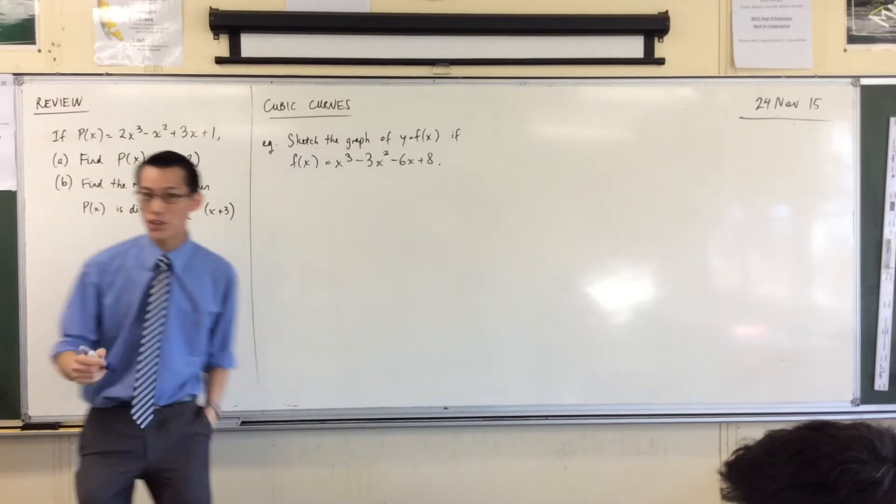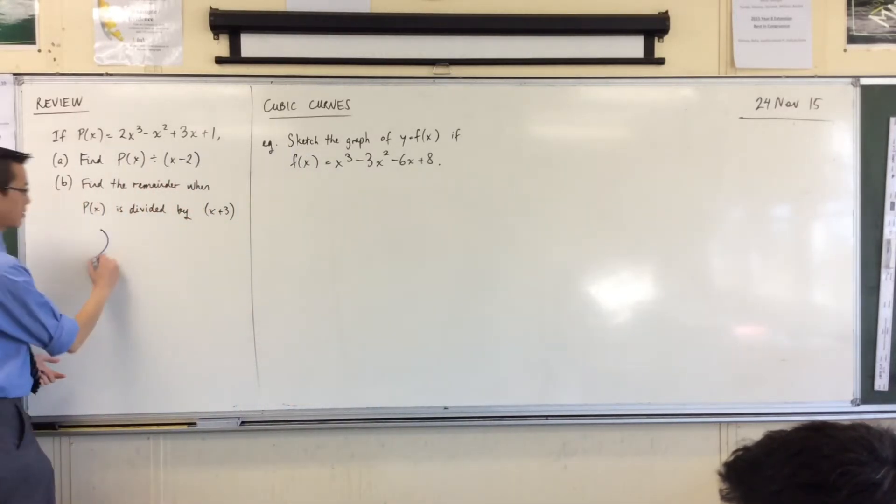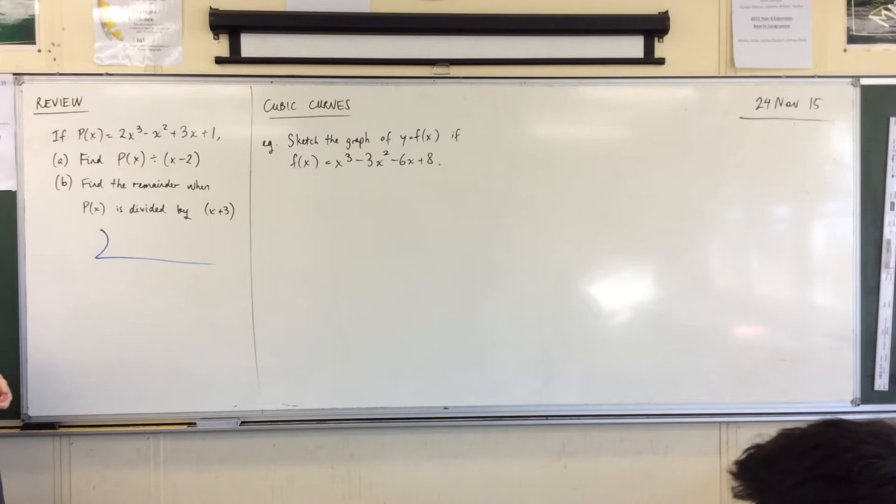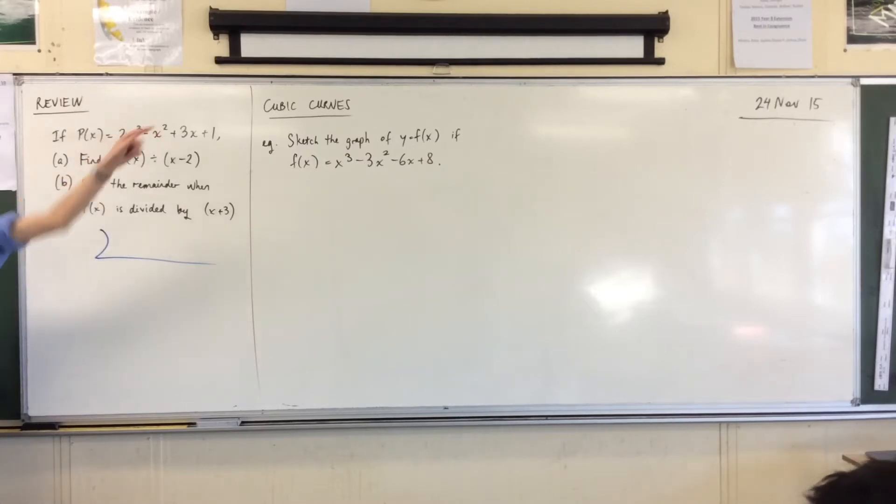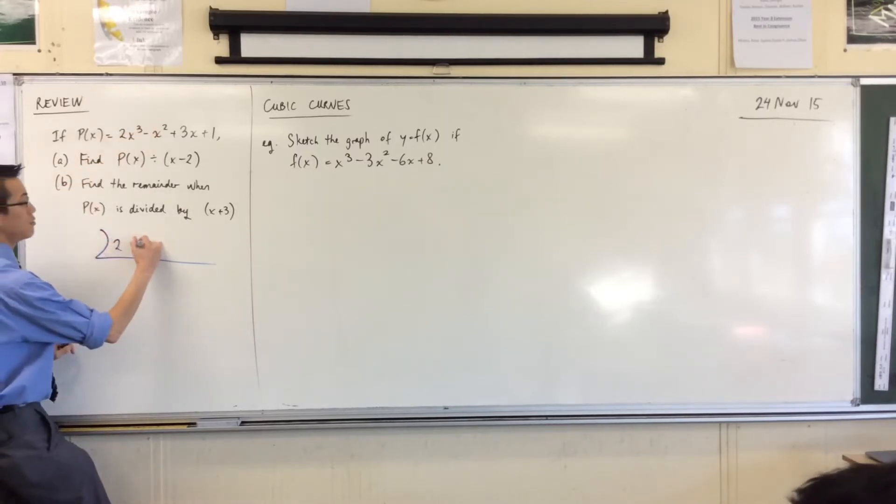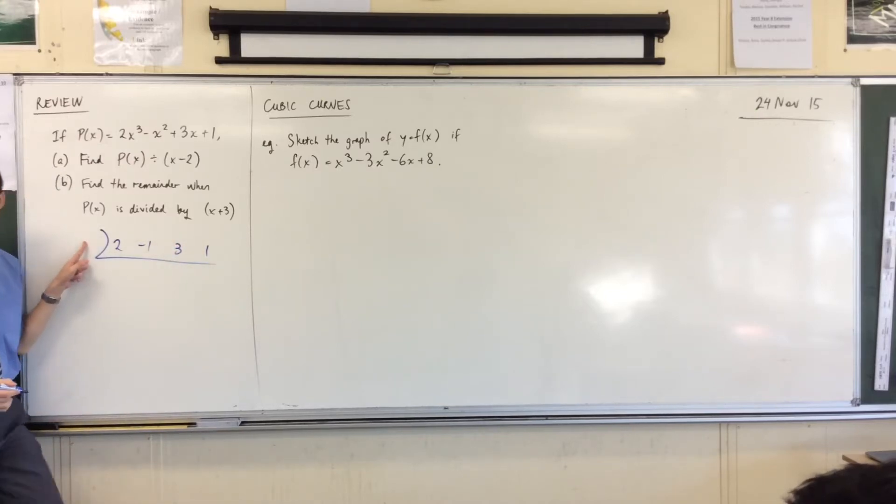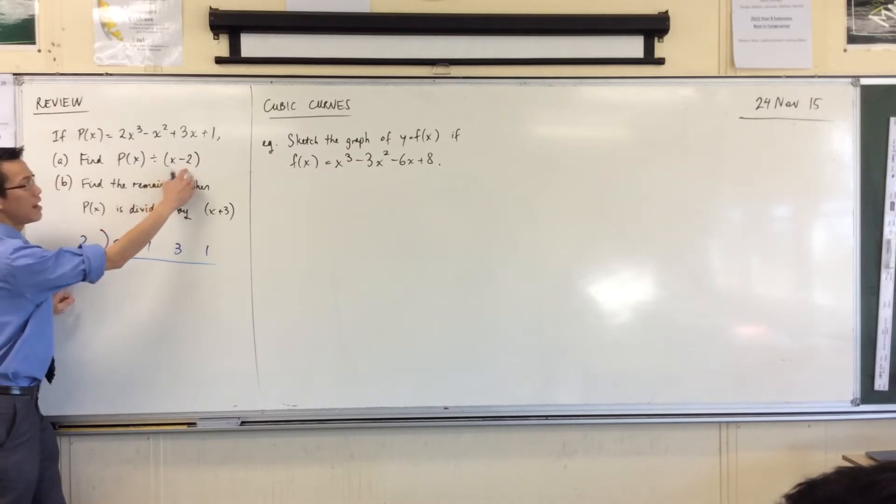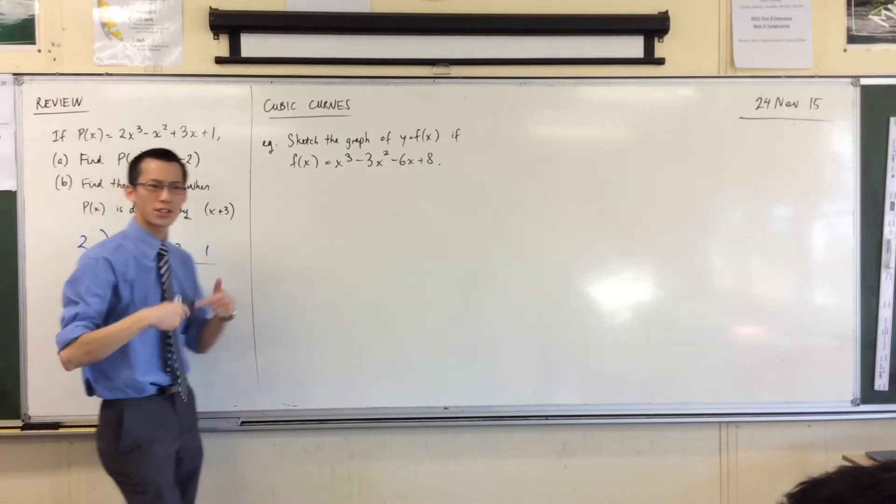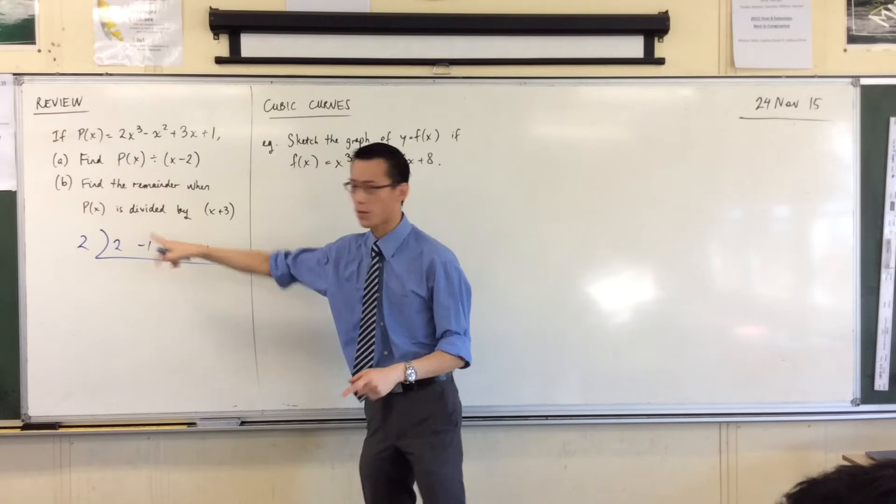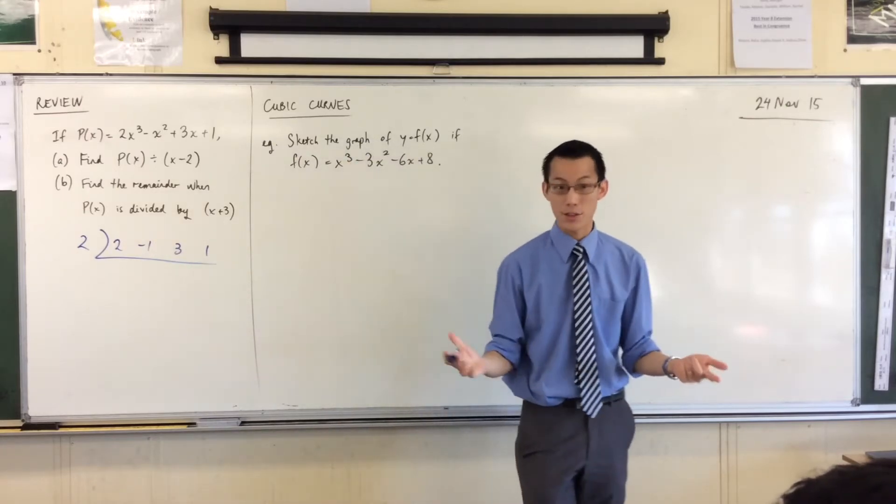Alright, so let's do part A. Let's do this division. I am going to do it synthetic because it is nice and quick to do. I need my coefficients. So I'm gonna write down 2, negative 1, 3, and 1. And what's this number that I write up front? It's 2, right? That corresponds to this number in here. If I had asked you to divide by x plus 2, what number would have gone out the front? It would have been negative 2, exactly.